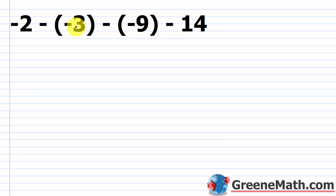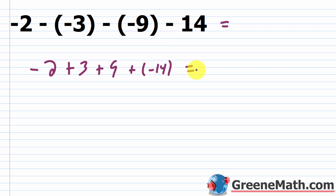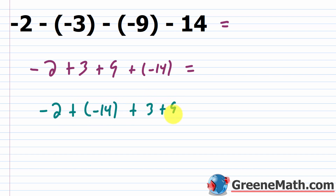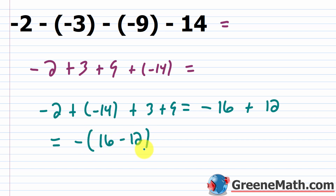Next: negative 2 minus a negative 3 minus a negative 9 minus 14. Negative 2 stays; minus a negative becomes plus a positive for the 3 and 9; and minus 14 becomes plus negative 14. Rearranging — since addition is commutative — put negative 2 next to negative 14: negative plus negative gives negative 16. Then 3 plus 9 gives positive 12. Now negative 16 has the larger absolute value, so the result is negative. 16 minus 12 is 4, giving negative 4.